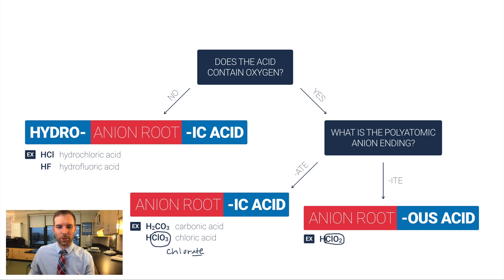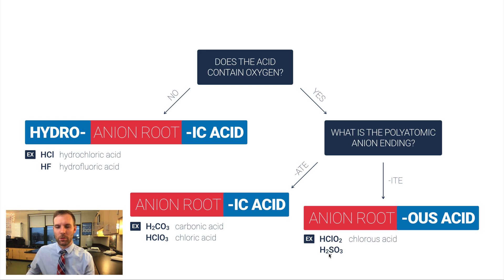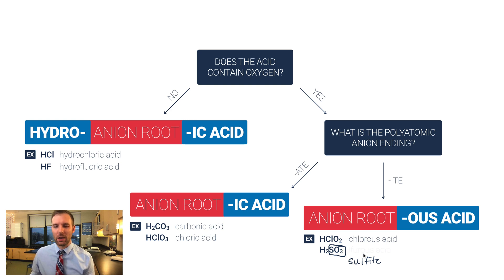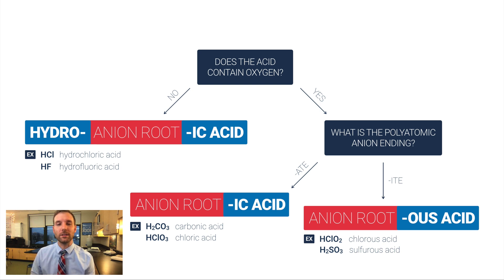If the polyatomic anion ends in -ite instead of -ate, the format is the same except you use -ous acid instead of -ic acid. For example, HClO2: the ClO2 piece is chlorite, the root is 'chlor,' so this is chlorous acid. One more example: H2SO3 — this part is sulfite, and the root is 'sulf.' But remember with sulfur, we add the -ur back in, so this wouldn't be 'sulfous acid' — it would be sulfurous acid. Watch out for carbon, phosphorus, and sulfur — their roots are a little different from the others.